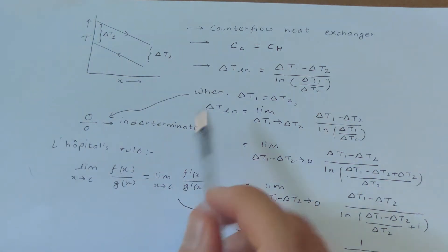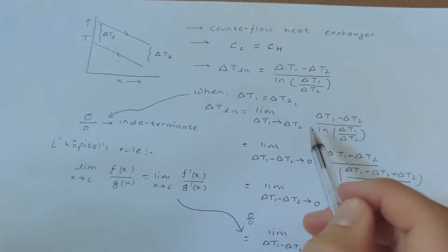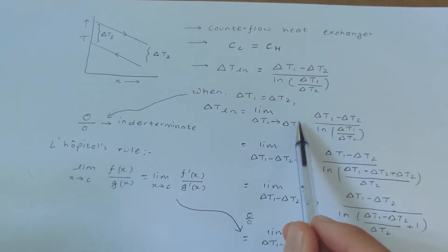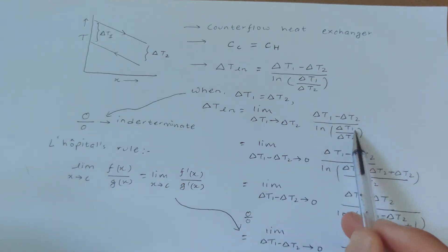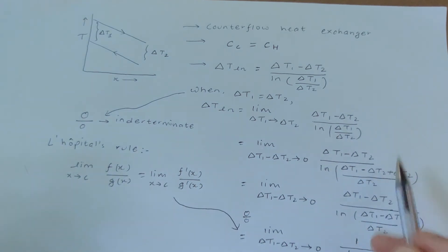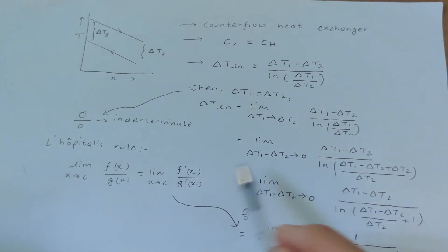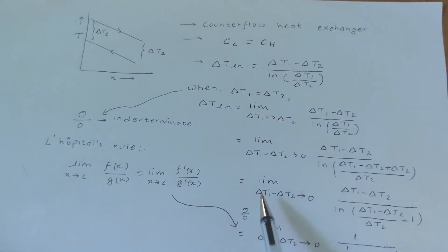Saying that Delta T1 equals Delta T2 is the same as saying the limit as Delta T1 tends to Delta T2. I've rewritten this as Delta T1 minus Delta T2 tends to zero. In the denominator, I've added and subtracted Delta T2 so that we can differentiate with respect to Delta T1 minus Delta T2. After simplification by separating this part, substituting Delta T1 minus Delta T2 tends to zero still gives zero over zero — an indeterminate form.